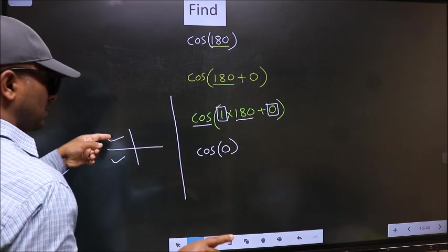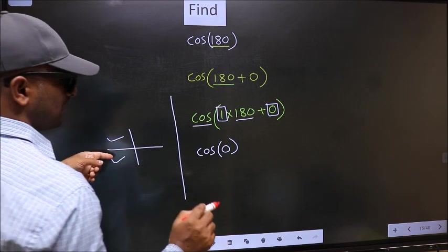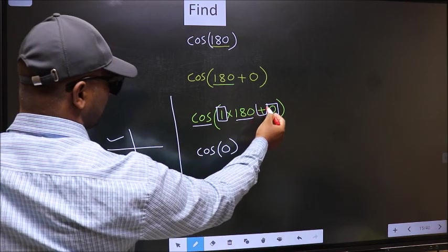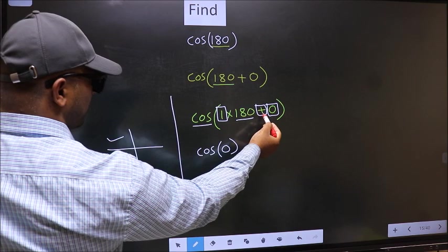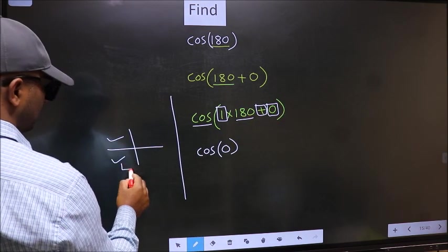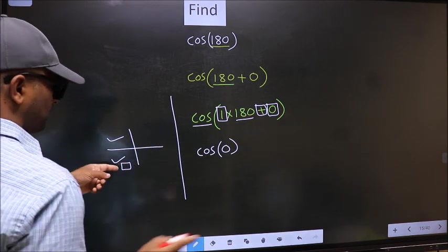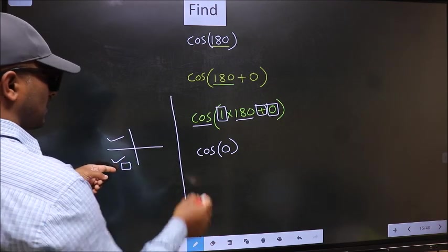So now, to select the quadrant, we should look at this symbol. Here we have plus. That means the angle lies in the third quadrant.